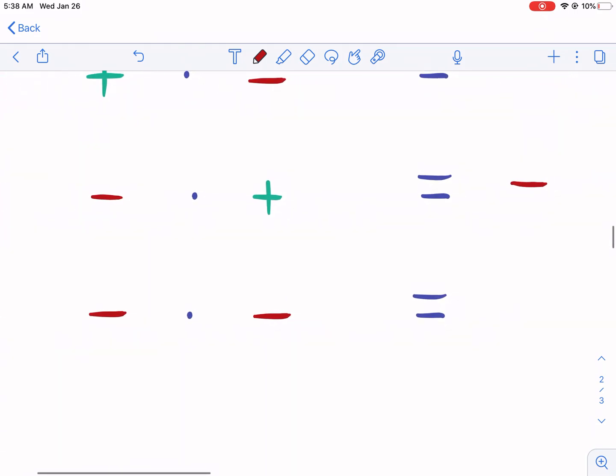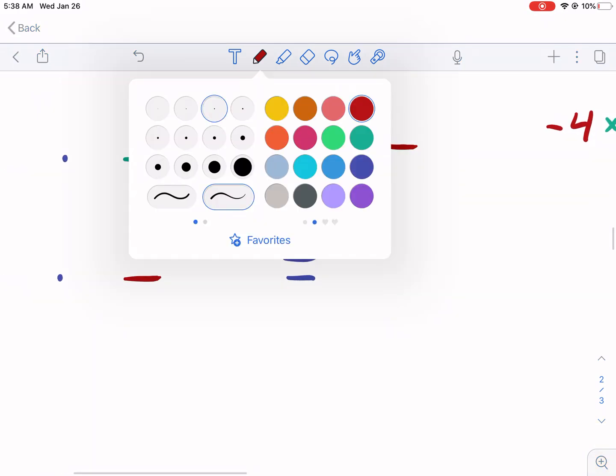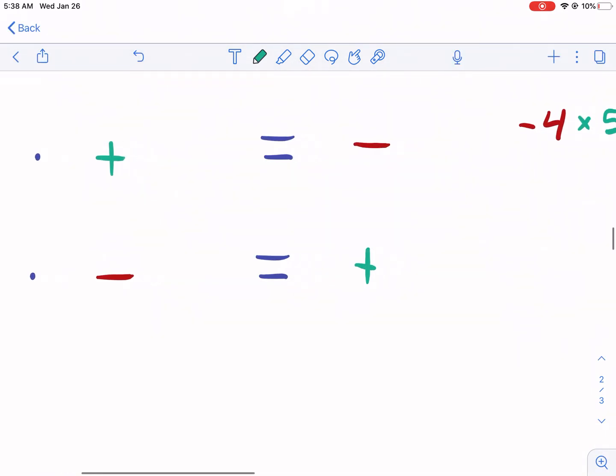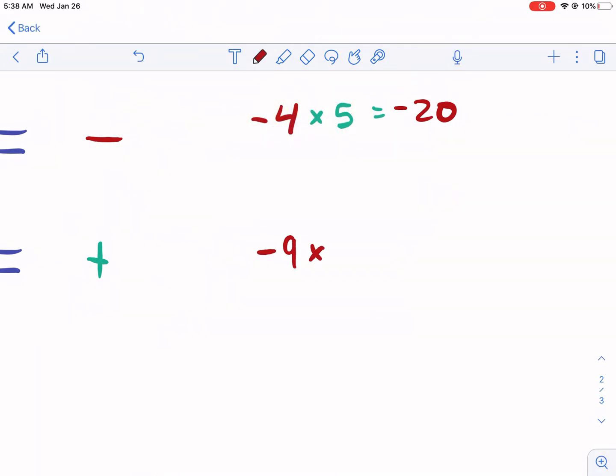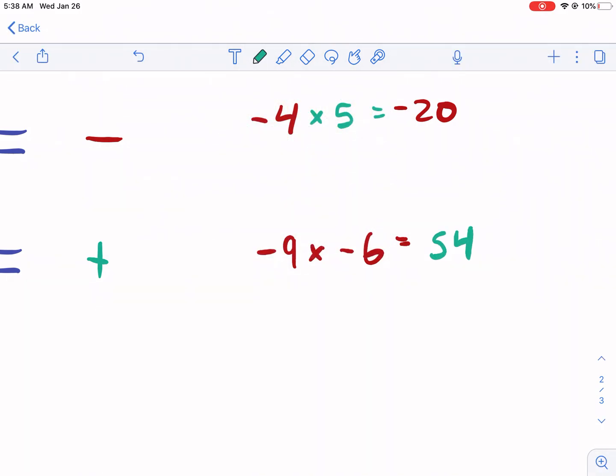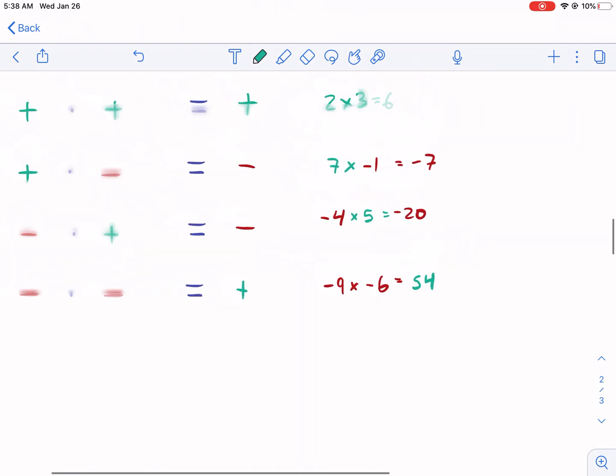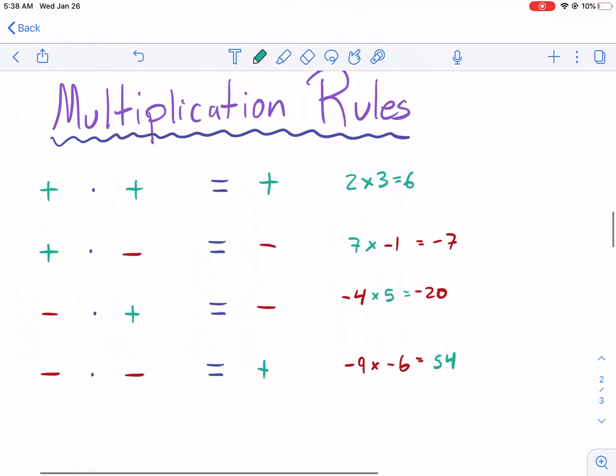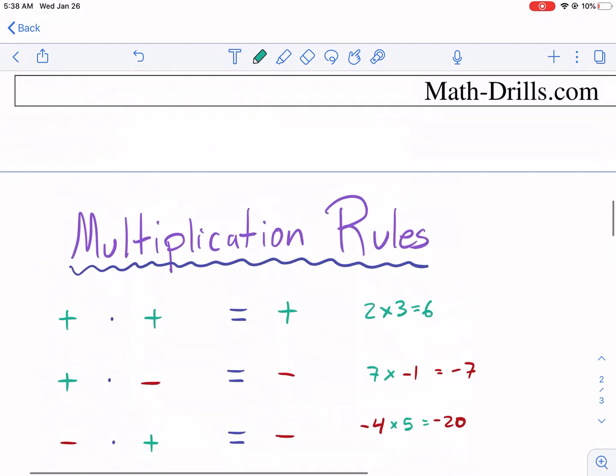And then our last scenario, we have a negative times a negative, and that is going to be a positive number. So real quick, just an example, let's do negative nine times negative six. That would give us a positive 54, not a negative 54. Just keep in mind, if we have two negatives multiply together, it's going to be a positive. Two positives is also going to be positive.